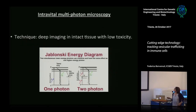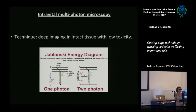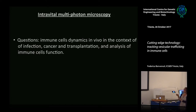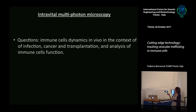What is two-photon or multi-photon microscopy? By the use of two photons simultaneously delivered on the samples, you can penetrate deep in tissue with very low toxicity and take images and record movies within a tissue. You can ask several different questions related to immune cell dynamics in vivo — in many different contexts such as infection, cancer, transplantation, and understanding the basics of immune responses in general.